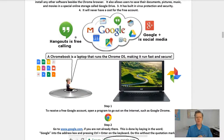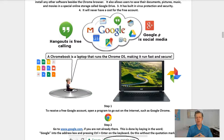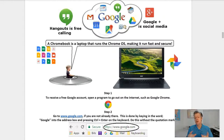With your Google account you get Hangouts, which is free calling — you can use your laptop, tablet, or other devices to make phone calls as long as you have a microphone. You can also do video conferencing with Hangouts if your machine has a webcam. You also have free social media to connect platforms like Facebook, free email, calendar, free Google Maps, and everything else is all included. Note: a Chromebook is a laptop that runs Chrome OS, making it run fast and secure.